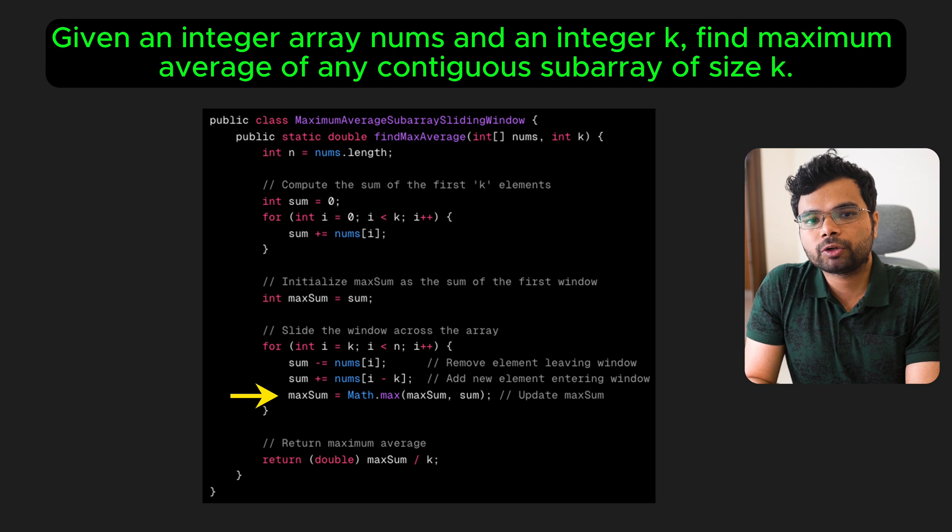Next, update the maximum sum if the new window sum is greater. After the loop ends, divide the maximum sum by k to get the maximum average.